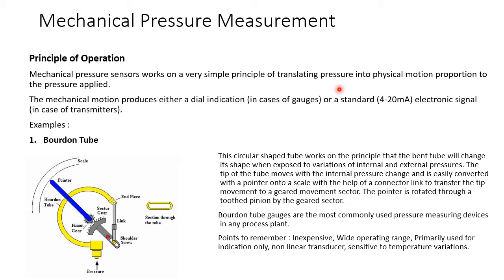This mechanical motion produces either a dial indication, as in the case of gauges, or a standard electronic signal in the case of transmitters. The most commonly used type is the Bourdon tube. As seen in the figure, there is a circularly shaped tube with a pressure inlet point. As pressure is applied, the tip of the tube moves, and this displacement is converted into a pointer arrangement through a pinion and sector gear. The pointer then rotates on a scale calibrated according to the Bourdon tube movement.